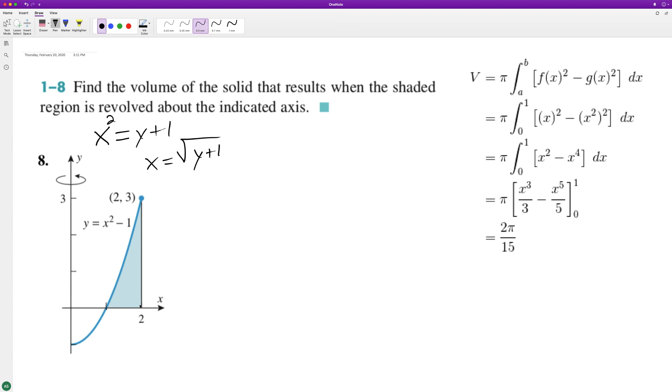So basically this is the washer method, pi r squared. We're going to have pi, and then we're integrating, and then we're going from two here because we're wrapping this around. It's solved for y minus the square root of y plus one.